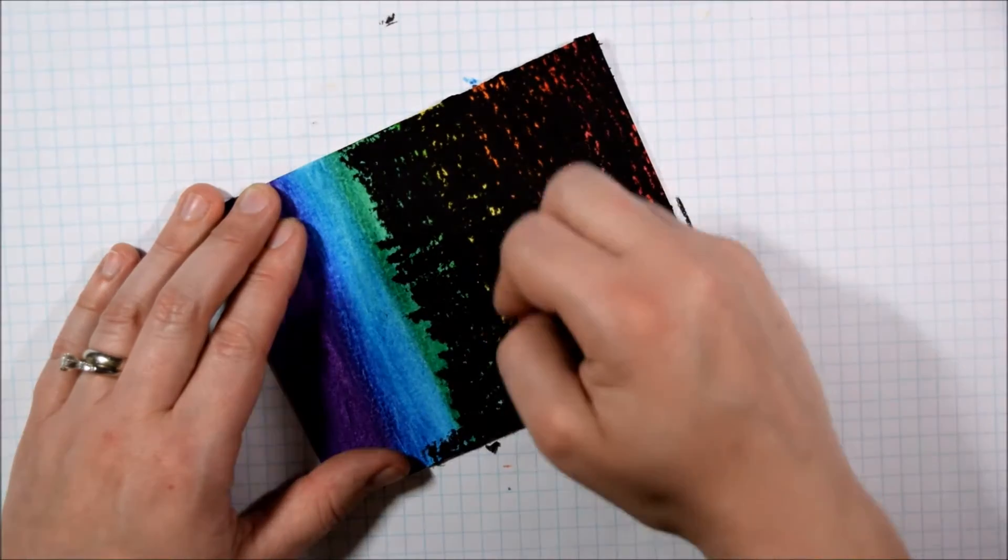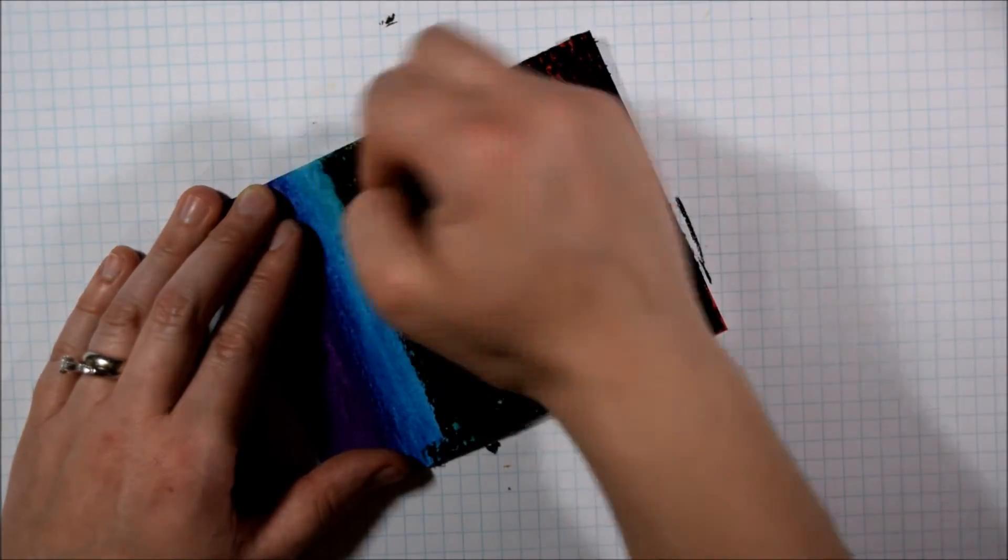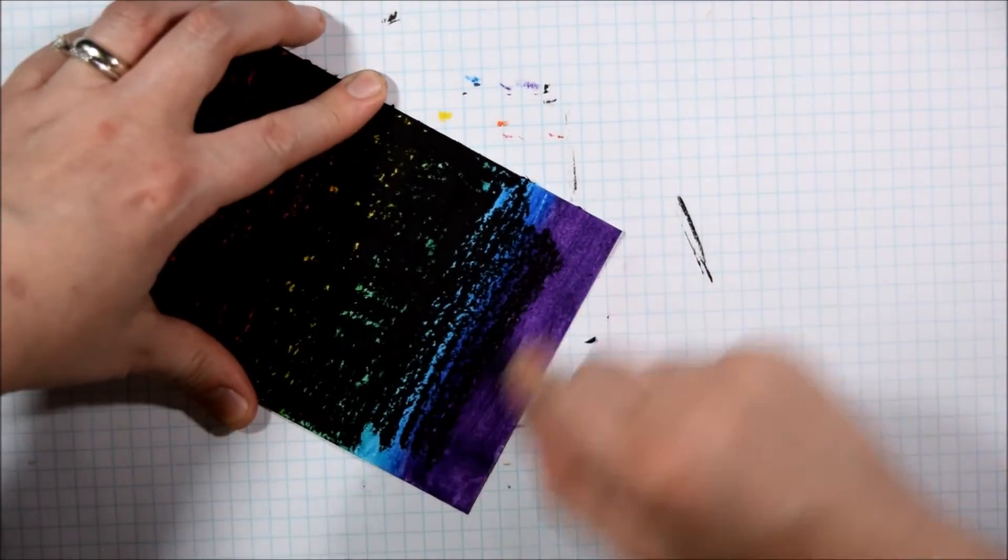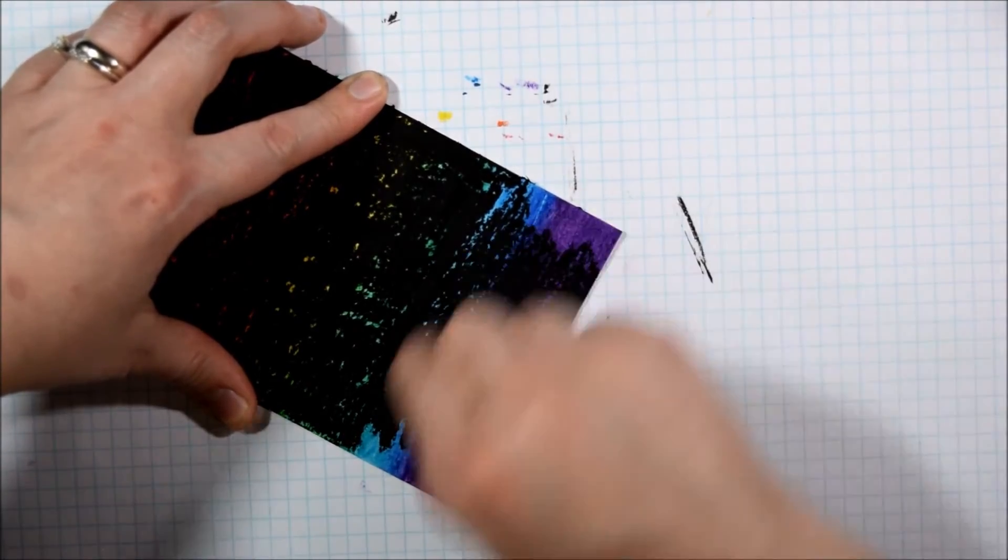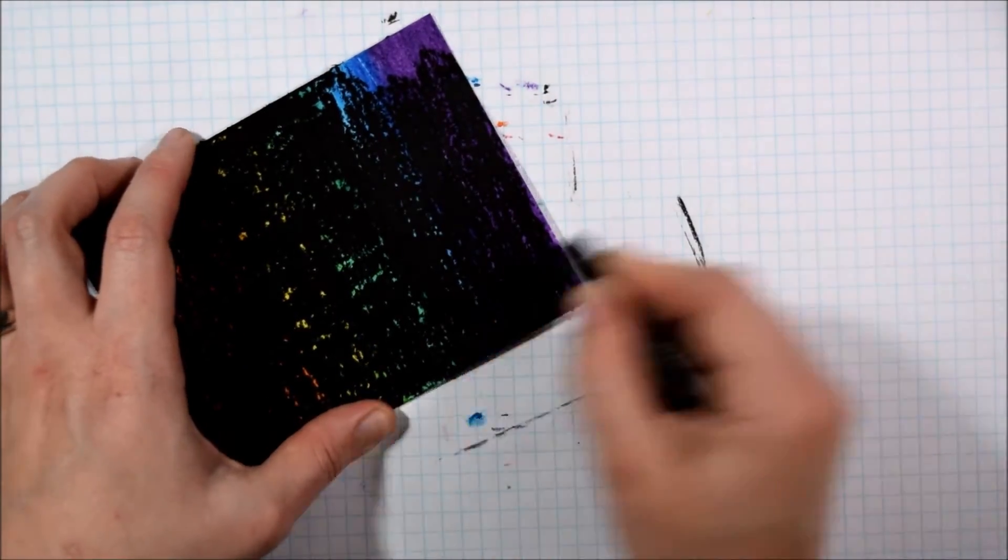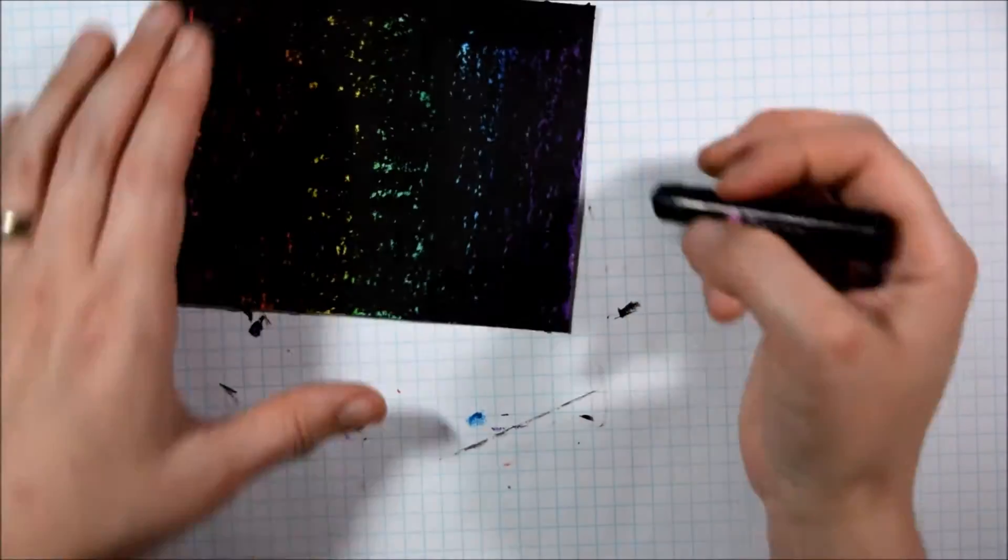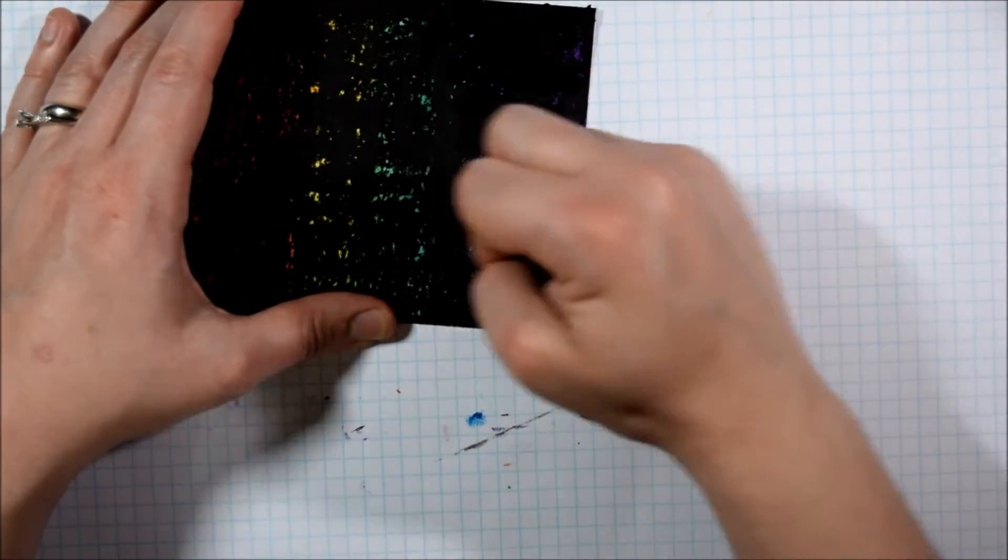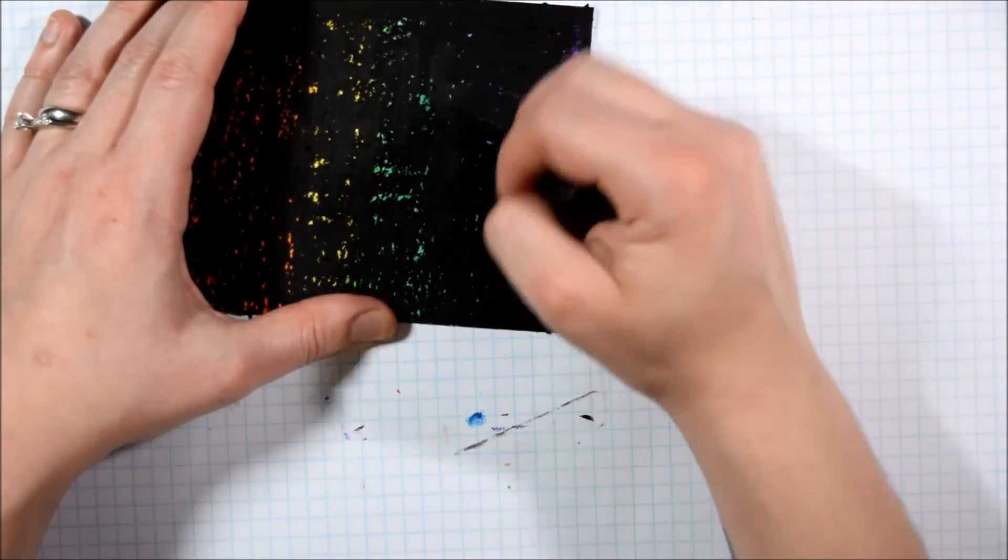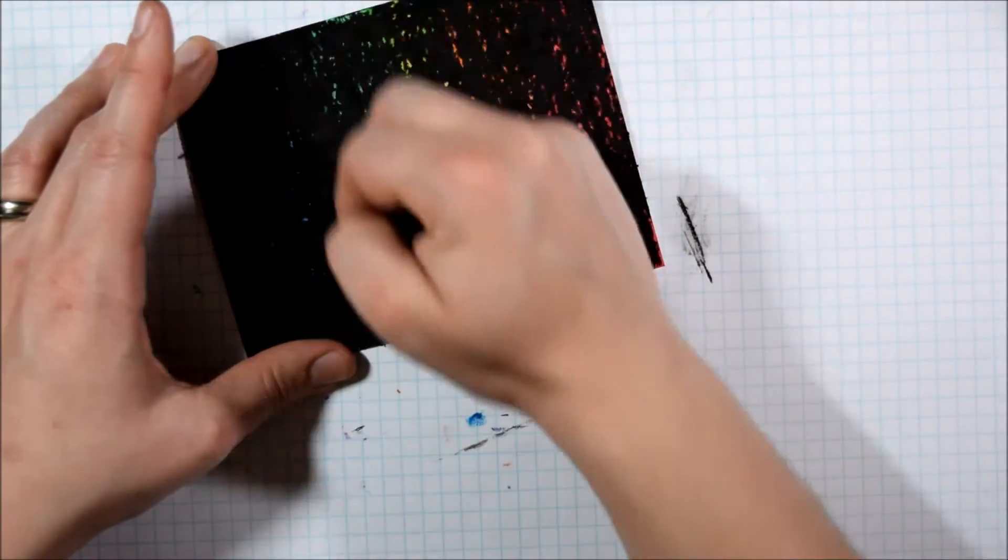Once I have my base layer on and it is activated with water as you saw, because that's important as I will be doing a little bit more application of water later, I'm going to completely cover the surface in black and cover all of that rainbow color because I will be pulling it off later on in the video as part of the technique.